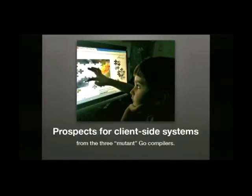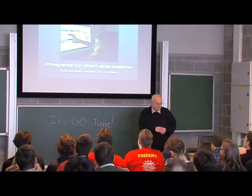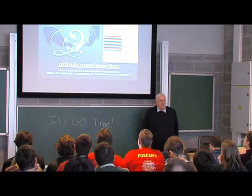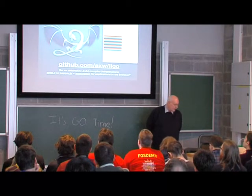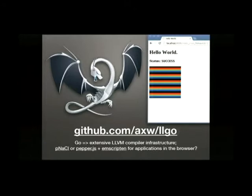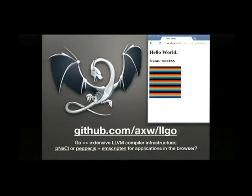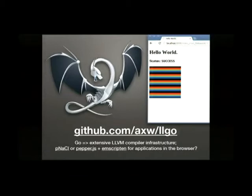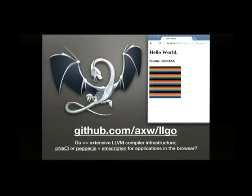Let's talk about the prospects on the client side for each of these, since that's where I started with this whole thing. For LLGo, it's got to the point where it can create a portable NaCl Hello World program, but it hasn't got much further yet. The prospects for LLGo are that you'll be able to run at almost native speed inside Chrome, and in emulated mode using Emscripten and Pepper.js. It should become a viable way to run very fast code in the browser. Unfortunately, because it's not there yet, I can't give you a little demonstration.